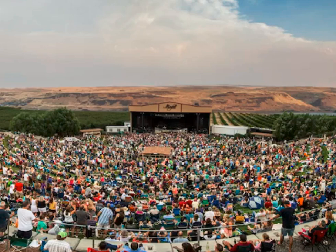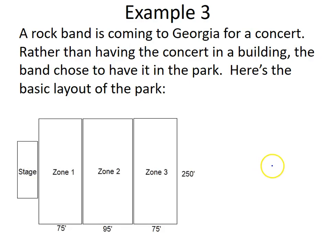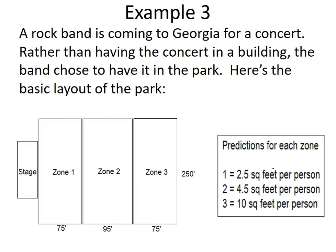Example three: a rock band is coming to Georgia for a concert in a park. The park has three zones, and we're given predictions for each zone showing square feet per person. To find how many people fit in each zone, we find the area of each zone and divide by the square feet per person.